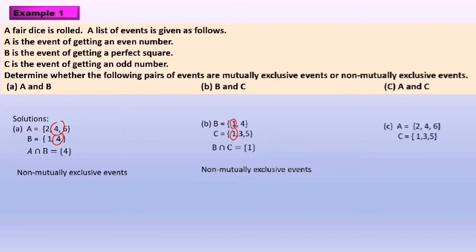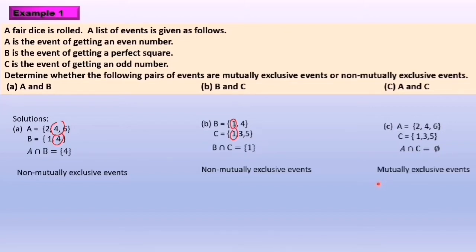Next, A and C. We list out the elements of Set A and Set C, and we find that Set A intersect Set C equals the empty set. Conclusion: event A and event C are mutually exclusive events.